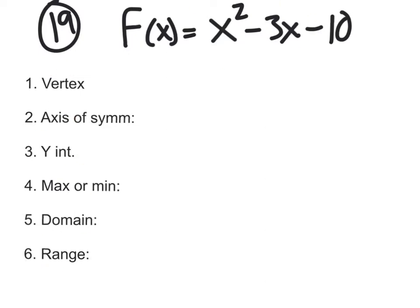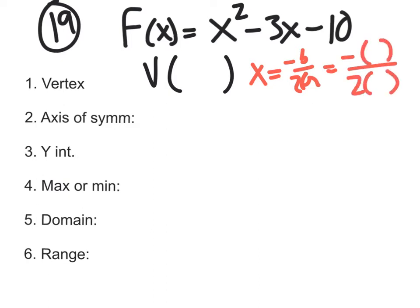So vertex. How do you find the vertex? The vertex is a coordinate, and that coordinate is going to be found by doing x equals negative b over 2 times a. That is ugly. Negative b over 2 times a. Now what's the b value? Negative 3. What's the a value?